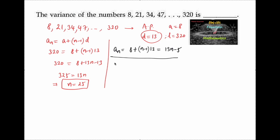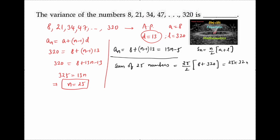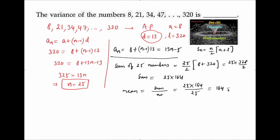To calculate the mean, we need the sum of these 25 observations. Using Sₙ = (n/2)(a + l), the sum = (25/2)(8 + 320) = 25 × 164. To get the mean, mean = sum of observations divided by number of observations = (25 × 164) / 25 = 164. So the mean is 164.